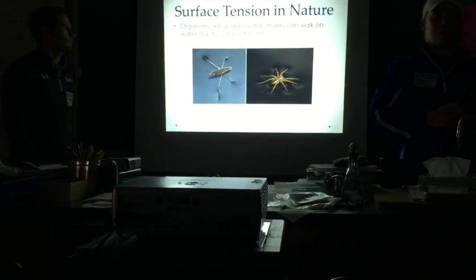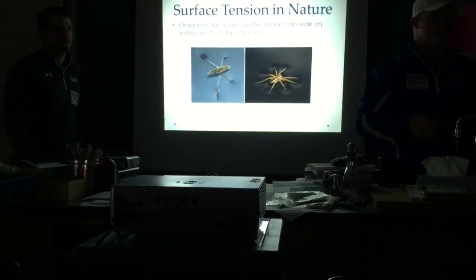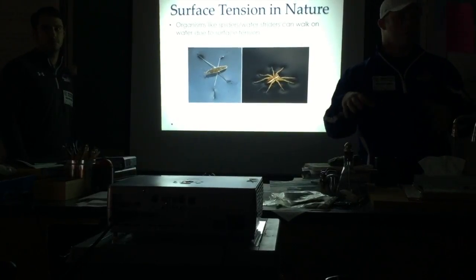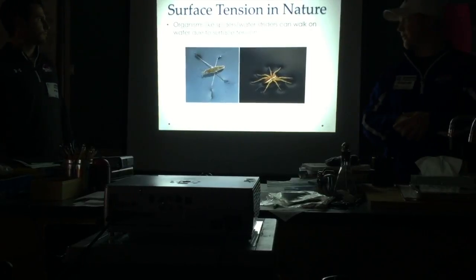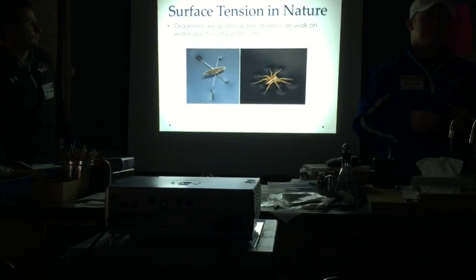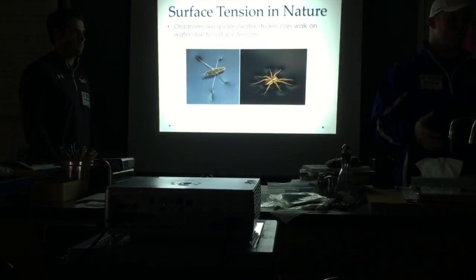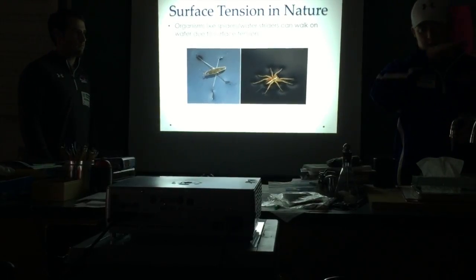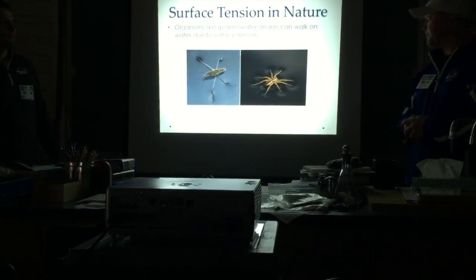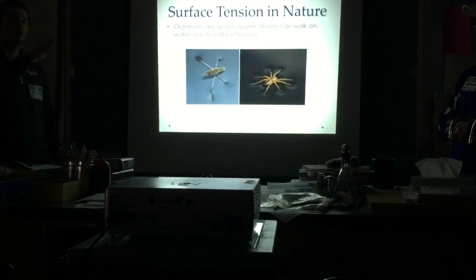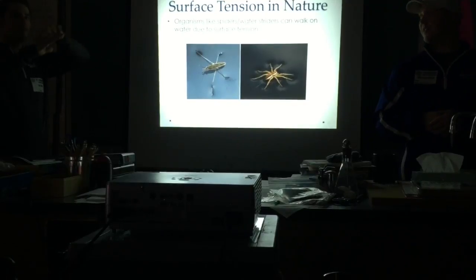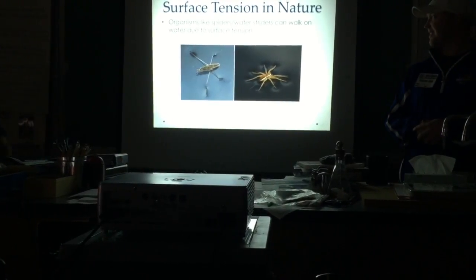Surface tension is most known in nature through things like water striders or spiders that can walk and glide across water. Organisms that are denser than water can be fully supported by that surface tension membrane at the top. There's also a pretty cool picture on Twitter of a shark coming out of the water where the head is above the water level but hasn't broken the surface tension yet — you can actually see the surface tension there.